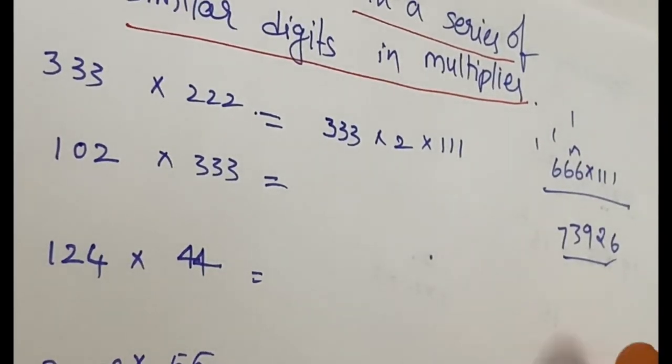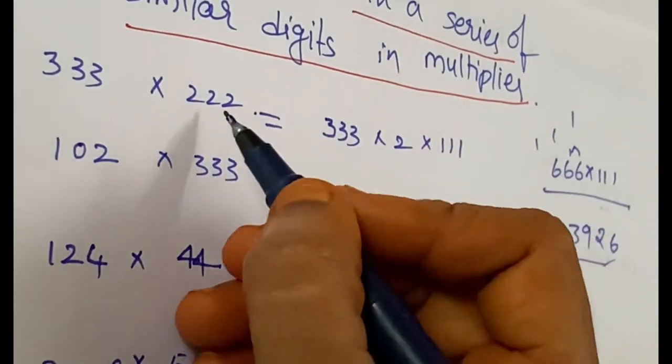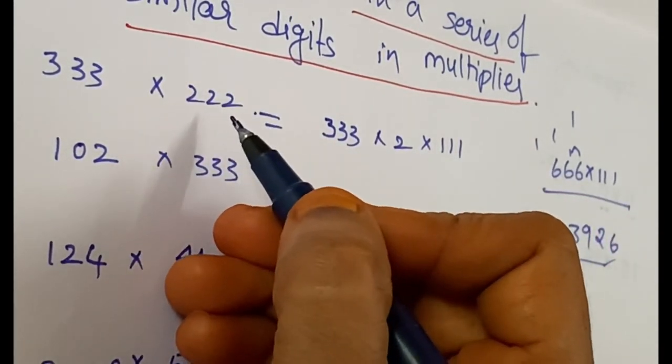We can calculate in a zippy way like this. Here, first, we have to convert this number into a series of ones.